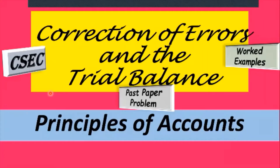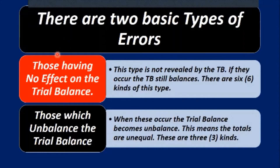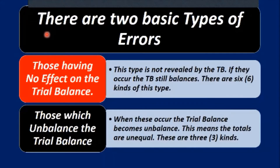Let's get right into it. There are two basic types of errors: those having no effect on the trial balance, and those which unbalance the trial balance. The first type — those having no effect on the trial balance — the error is not revealed by the trial balance. When they occur, the trial balance still balances. There are six kinds of this type.